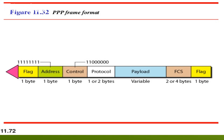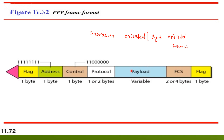PPP frame format. PPP uses a character-oriented or byte-oriented frame. The PPP frame format consists of the following fields: a flag field, an address field, and a control field which is one byte in size, followed by the protocol field which may be around one or two bytes, a payload field which is variable in size, and a frame check sequence FCS which may be around two or four bytes, followed by the flag field which is once again one byte.